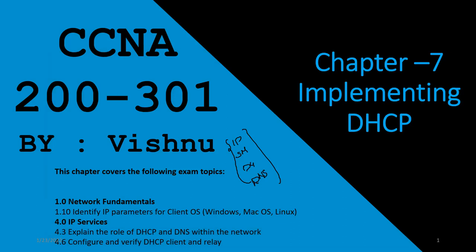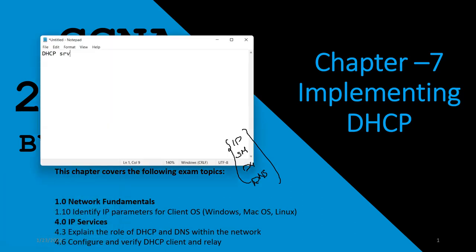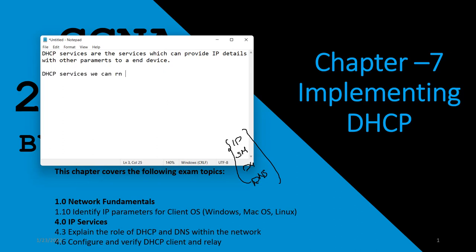If you have only one computer, it's very easy to configure manually. But what if you have hundreds of PCs? It's not easy to configure everything and manage it manually. In that condition, we can use DHCP services. DHCP services can provide IP details along with other parameters — subnet mask, default gateway, and DNS. DHCP can run on a router or on a server.